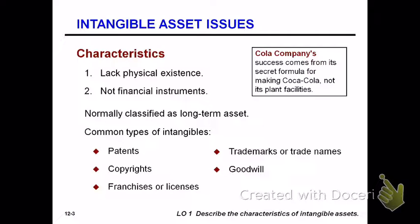Characteristics: intangibles lack physical existence, so they're contractual rights or legal rights. They're not financial instruments, so they're not backed by cash of some type. They're normally long-term assets. The common ones we see are patents, copyrights, franchises, goodwill, and trademarks.